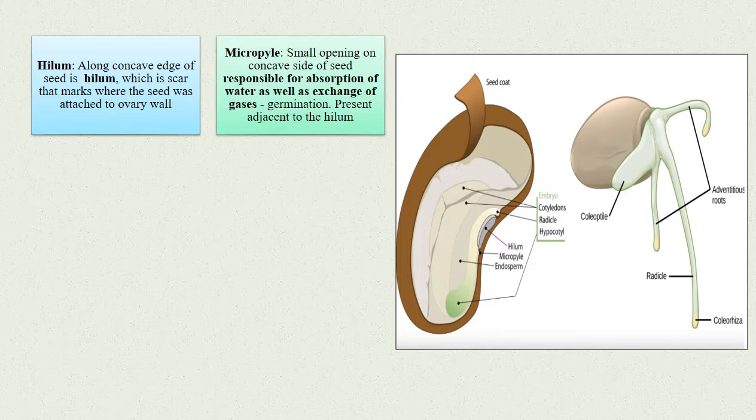Micropyle: It is a small opening on the concave side of the seed, responsible for the absorption of water as well as exchange of gases, which takes place during germination. It is present adjacent to the hilum.